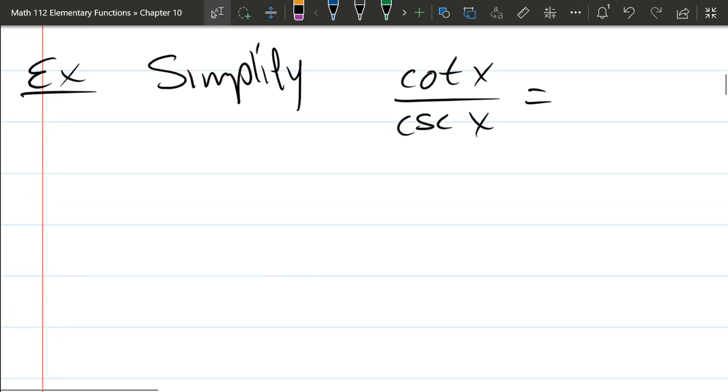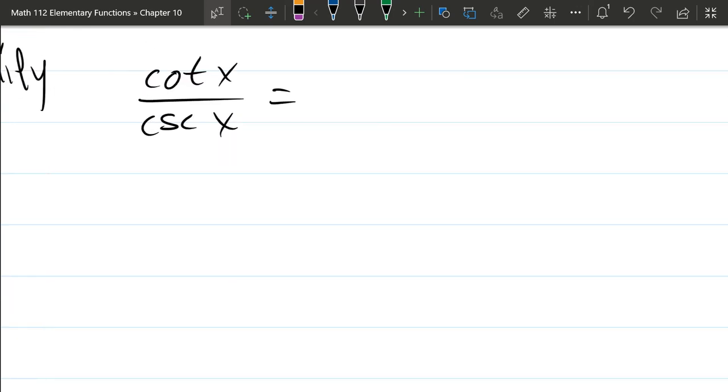So we got cotangent was cosine over sine. Now in that table, they were all written with thetas, but right here, our input is x, not theta.